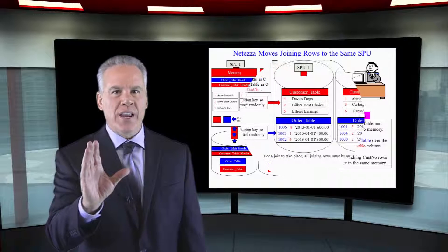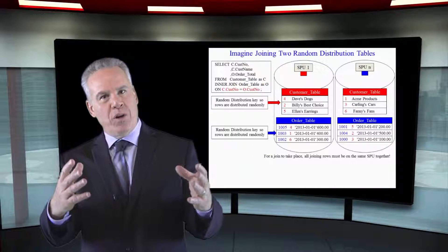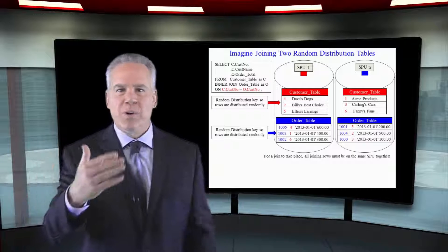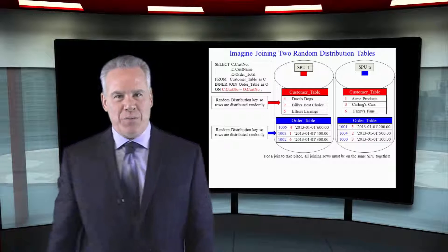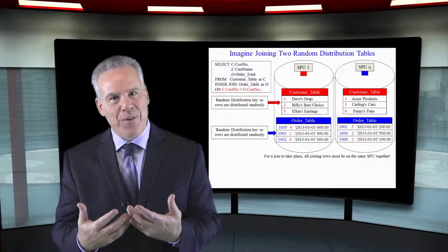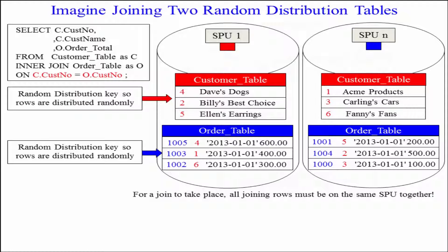Imagine that you have a table that is distributed on random — even distribution, but random distribution. Imagine you have another table that is also distributed on random — even distribution, but again, random distribution. And now you're going to join these two tables on customer number.